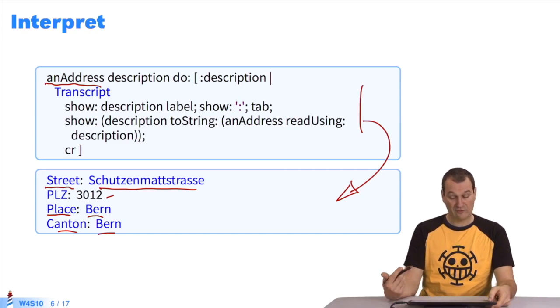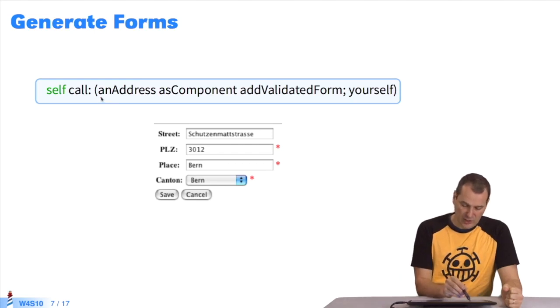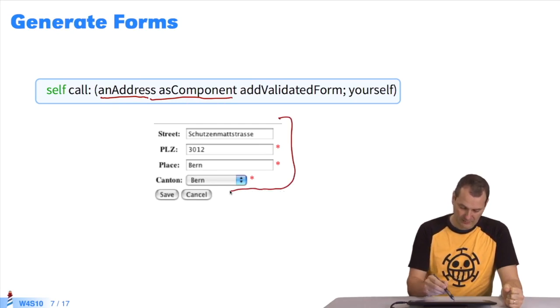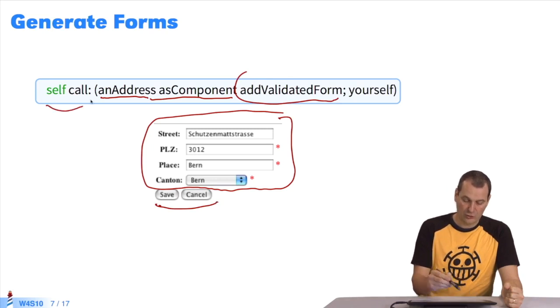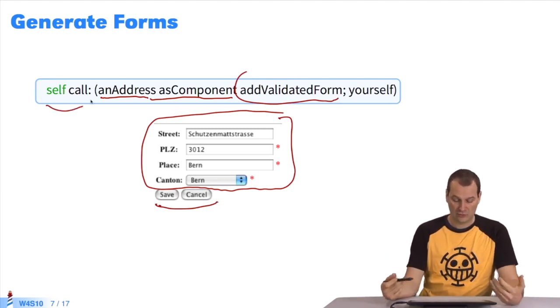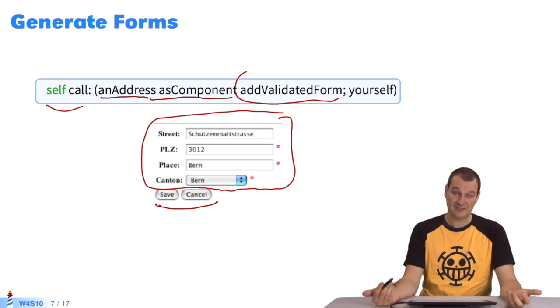But now we'll do more complex things with Seaside. Like creating a visual component. Here I'm saying address object. I want to see you as a component. That generates this part. I'll add a validation form which gives me save and cancel. And I'll write a call command so it displays. As you can see, I managed all that without even using the Seaside DSL. Described, my web components are generated automatically. That's powerful.